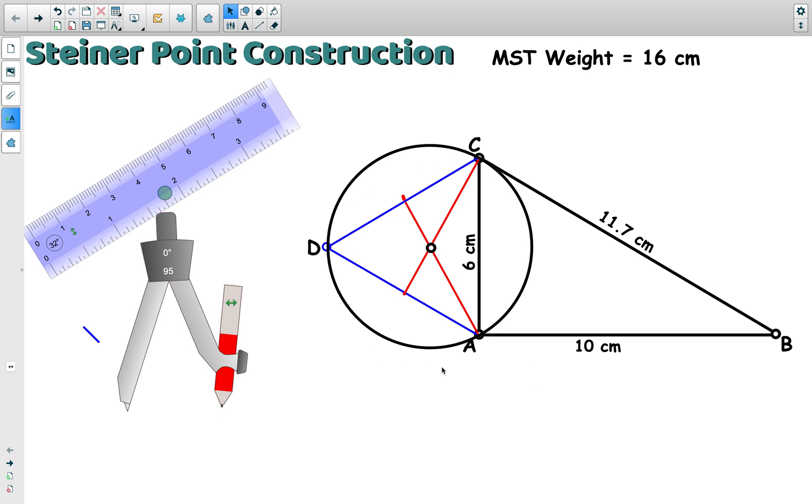So there's our circle that goes through all three of the vertices centered here at the circumcenter. Now we want to take point D and point B and connect them. Those are the two vertices that are opposite of AC. When we connect those two, their intersection with the circle will locate the Steiner point.